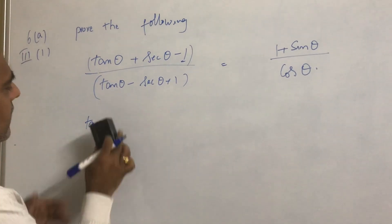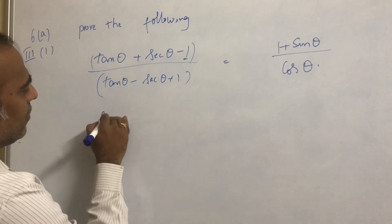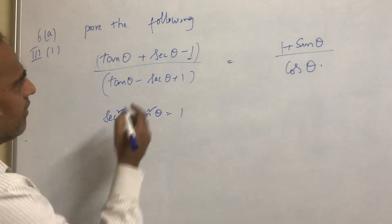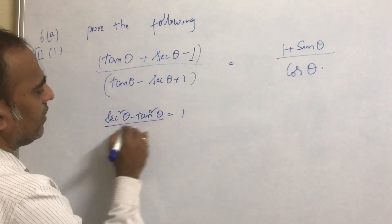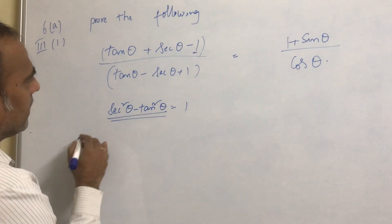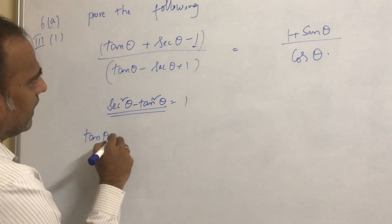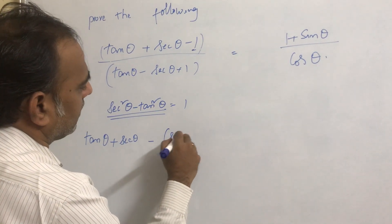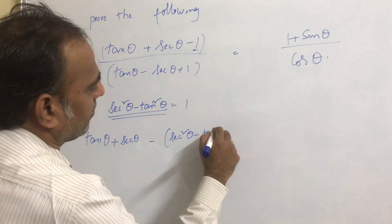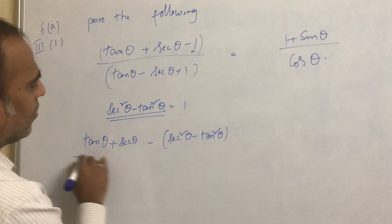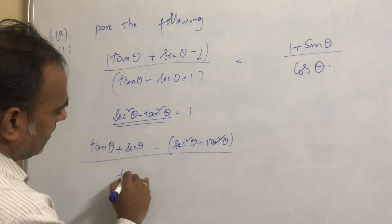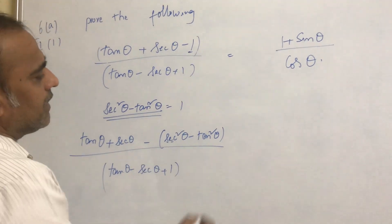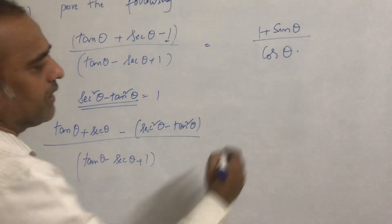We know that sec²θ − tan²θ = 1. So we substitute sec²θ − tan²θ in place of 1. The numerator becomes: tan θ + sec θ − (sec²θ − tan²θ), all divided by tan θ − sec θ + 1.